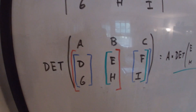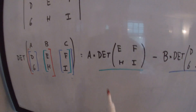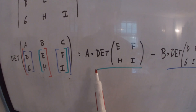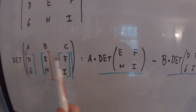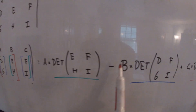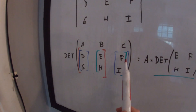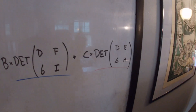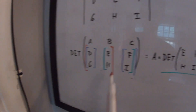It's a little hard to remember, but written out it looks like this: A times the determinant of E, F, H, I — minus B times the determinant of D, F, G, I — plus C times the determinant of D, E, G, H.